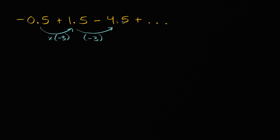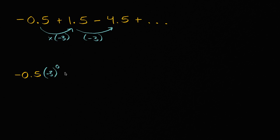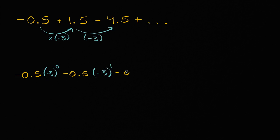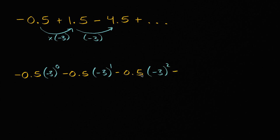So we could actually rewrite this series as being equal to negative 0.5 times negative three to the zero power, plus negative 0.5 times negative three to the first power, minus 0.5 times negative three to the second power. And we're just going to keep going like that, having minus 0.5 times negative three to higher and higher and higher powers.